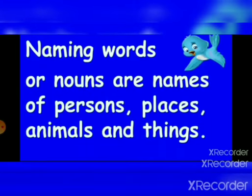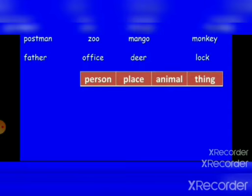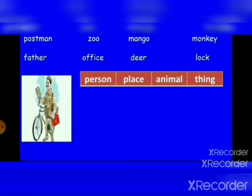Naming words or nouns are names of persons, places, animals, and things. Postman — person. Zoo — place. Mango — thing. Monkey — animal. Father — person. Office — place. Deer — animal. Lock — thing.